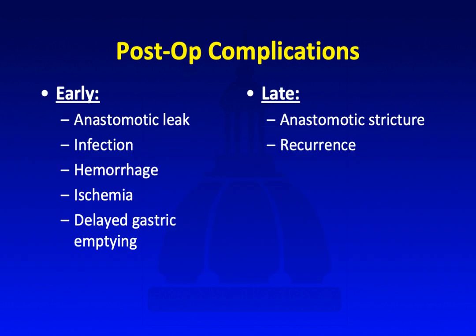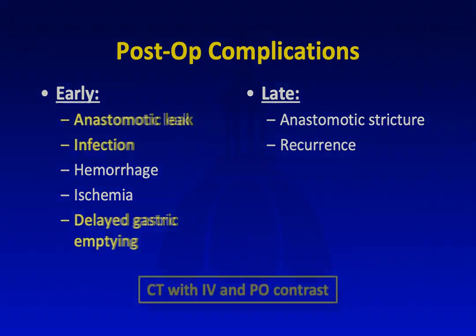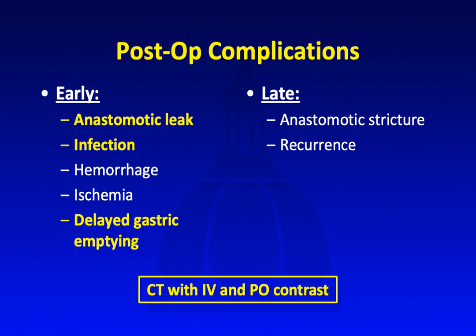When thinking about post-op complications, we divide them into early and late. In the early stage, while the patient is still in the hospital recovering, we worry about anastomotic leak, infection, hemorrhage, ischemia, and delayed gastric emptying. When clinical concern is infection, we want to give IV contrast. If there's concern for anastomotic leak or delayed gastric emptying, PO contrast is very helpful, and also helps differentiate bowel from fluid collection.